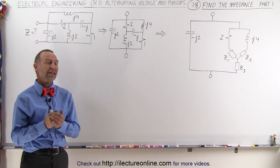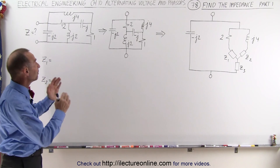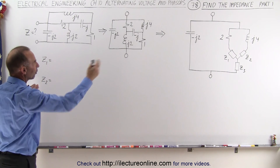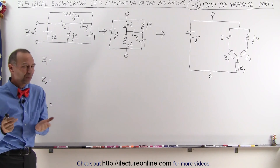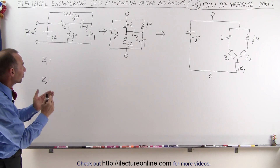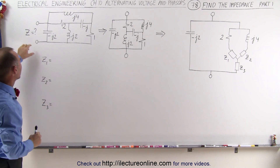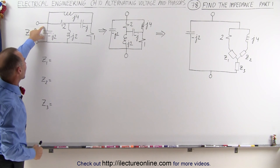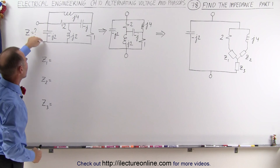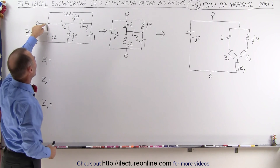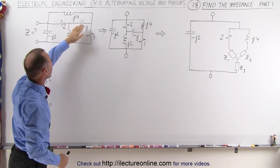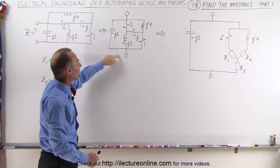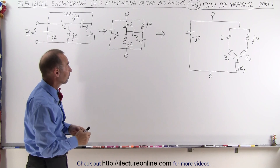Welcome to our lecture online. In this example we're going to try to find the impedance of the circuit right here. Notice that I've drawn some other forms of the same circuit, because sometimes we don't always realize what the circuit looks like unless we redraw it. We have the input and output to the circuit. Notice we have one capacitor across the two terminals, and when we redraw the other components, we begin to see that we have a bridge circuit.